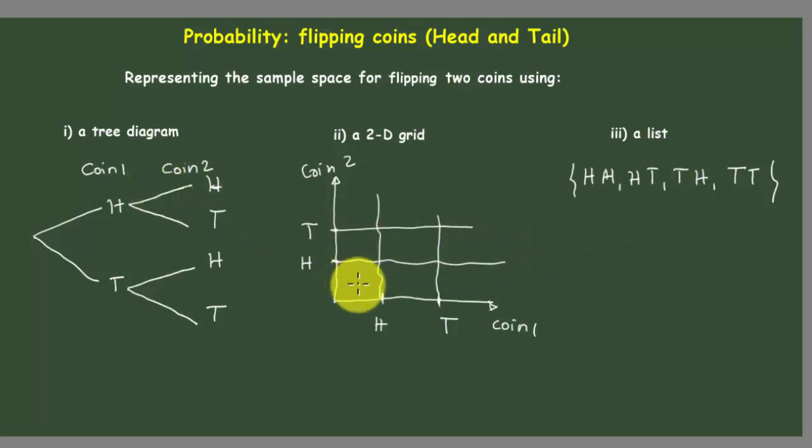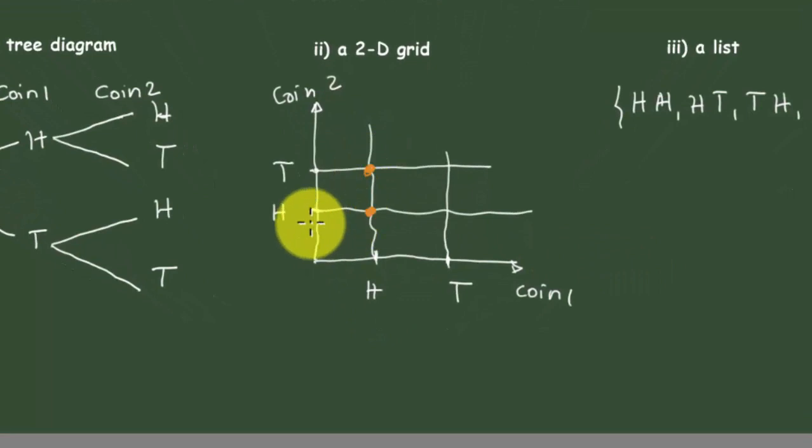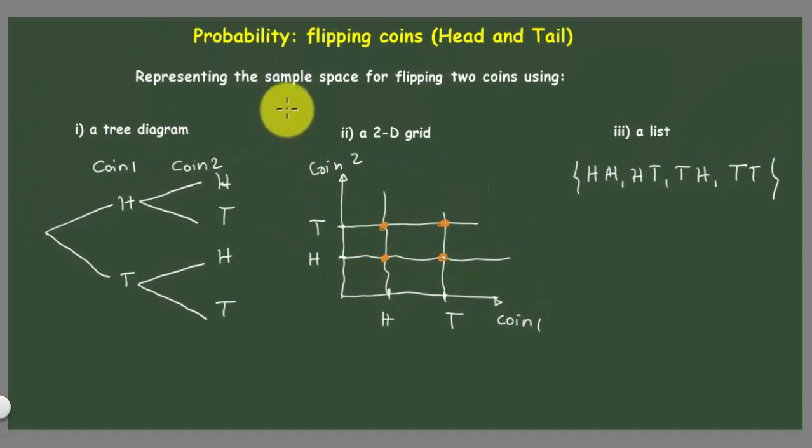We have head-head, which means it's going to be here at head and head. Right here we got head and head, head and tail here, tail and head, and tail and tail. This is how you can represent the sample space.